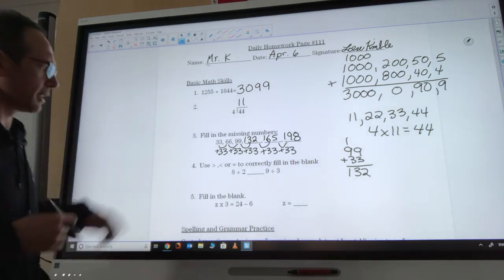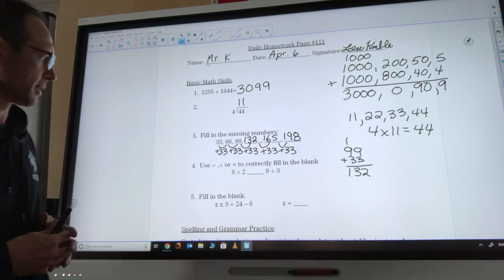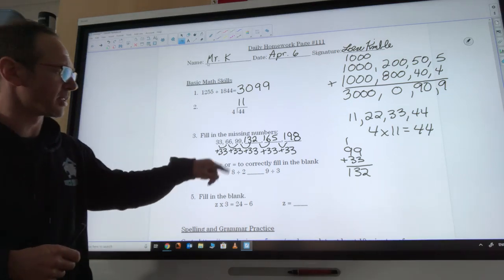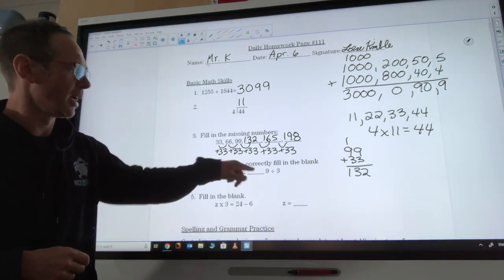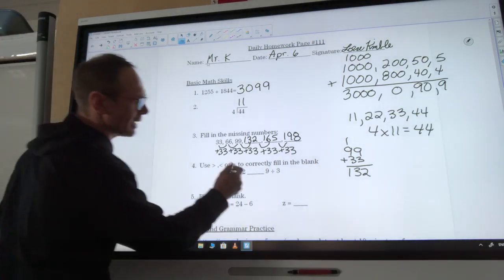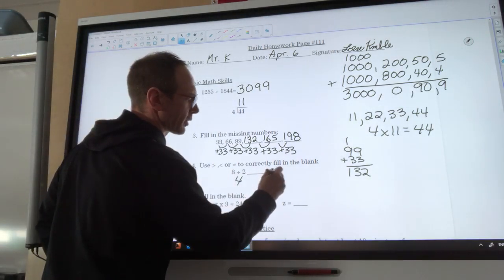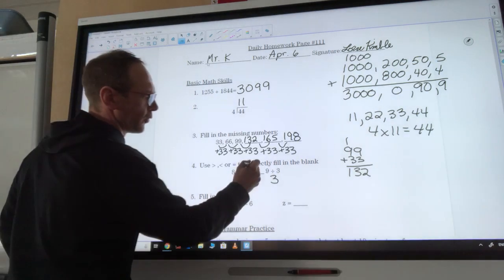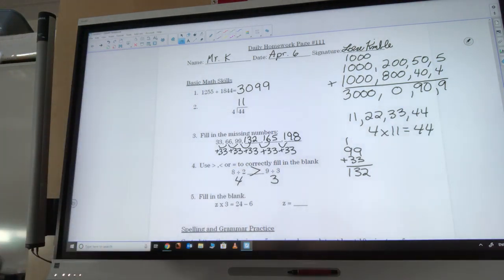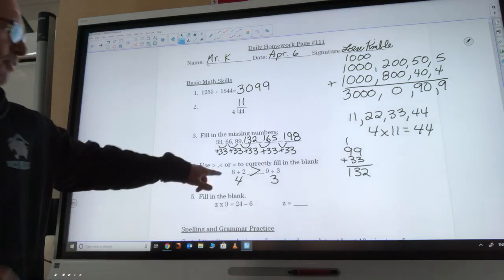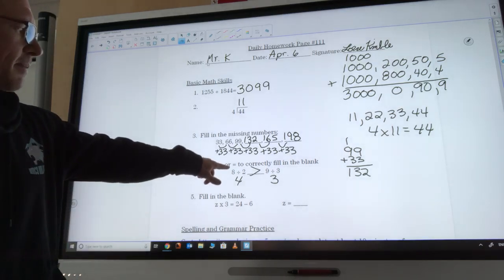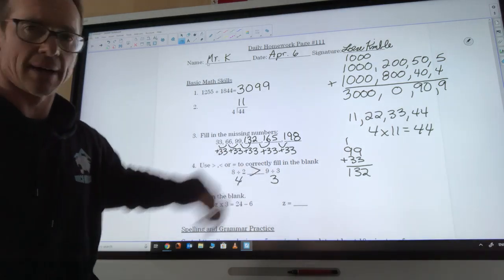Number four, we're using these comparison symbols. So it says 8 divided by 2, is that greater than, less than, or equal to 9 divided by 3? Well, 8 divided by 2 is 4 and 9 divided by 3 is 3. So 4 is larger. So we kind of draw it so that the alligator is eating the 8 divided by 2. In math terms, we would say 8 divided by 2 is greater than 9 divided by 3.